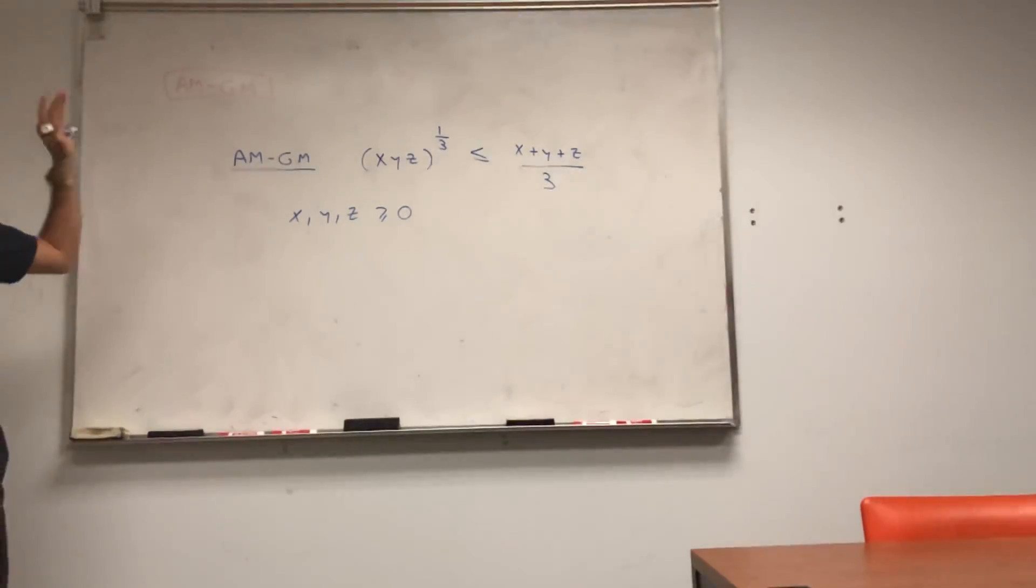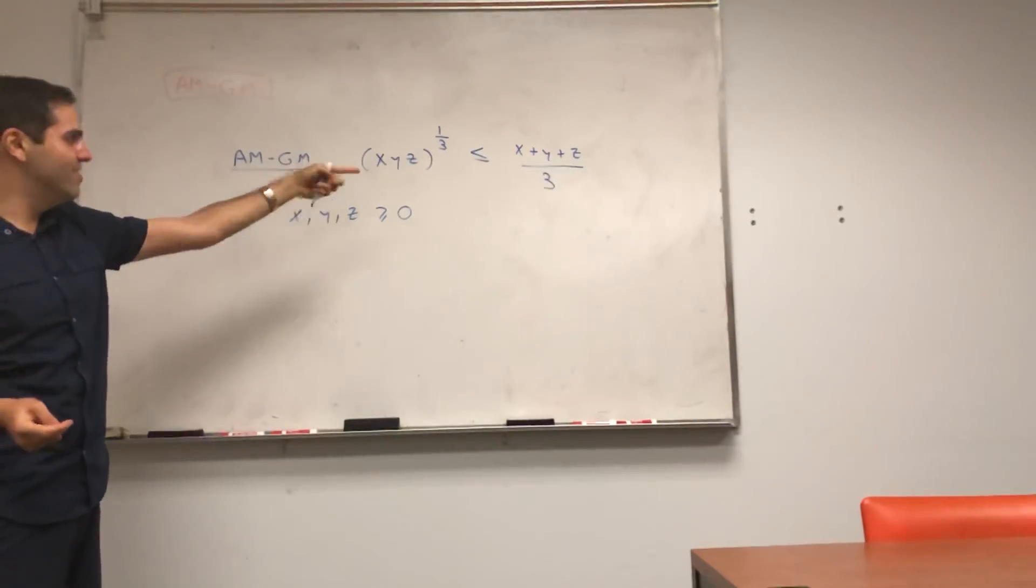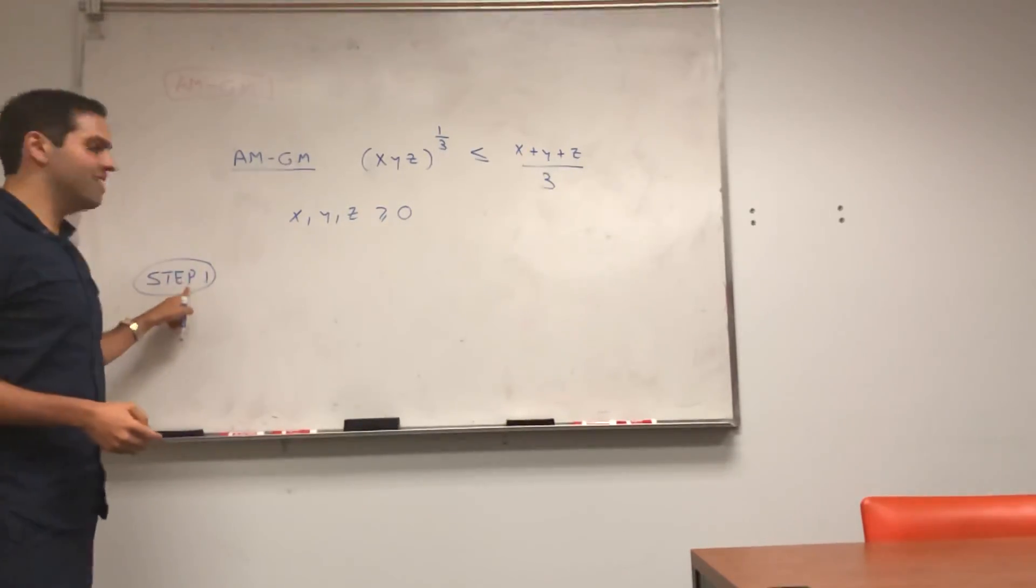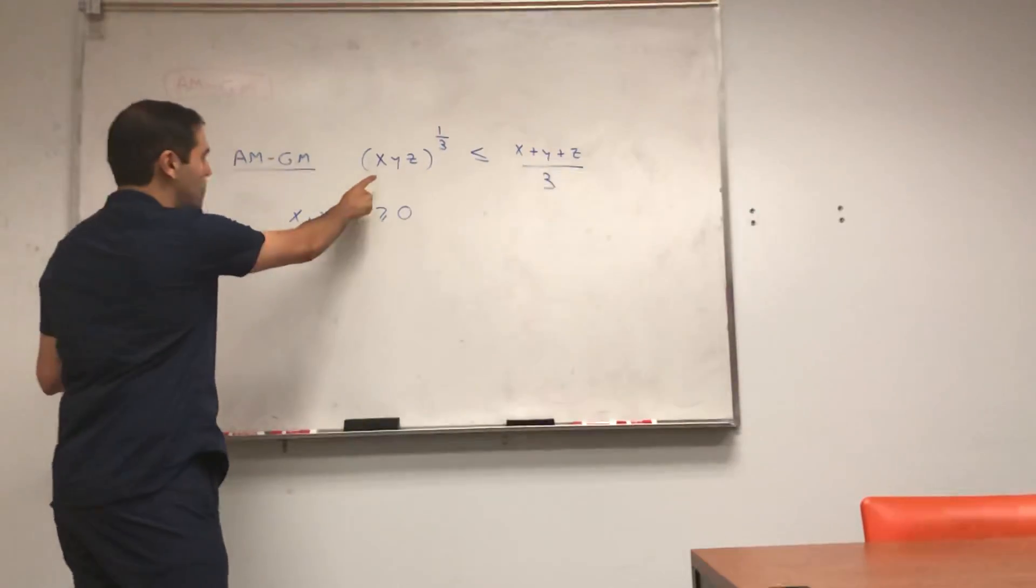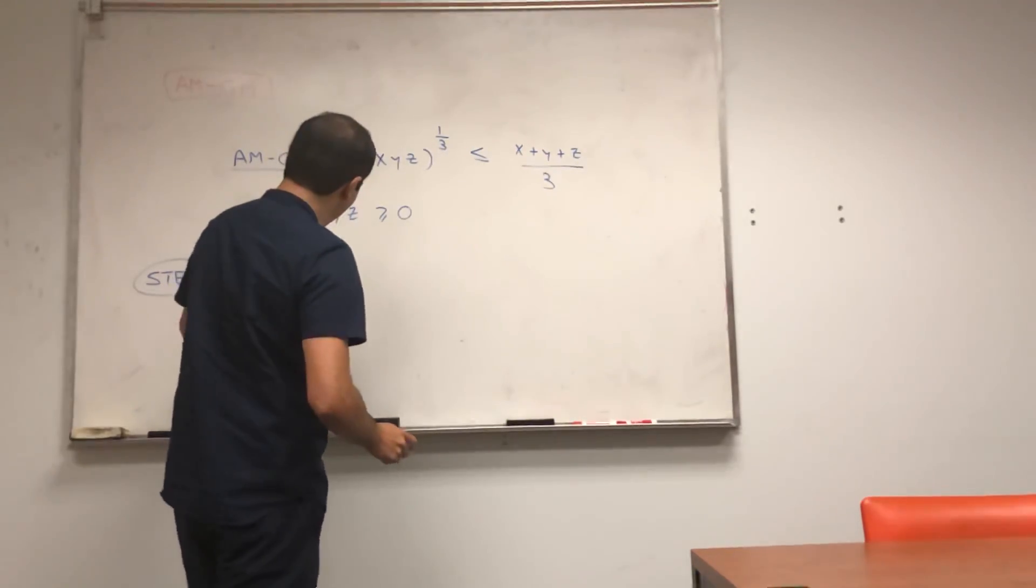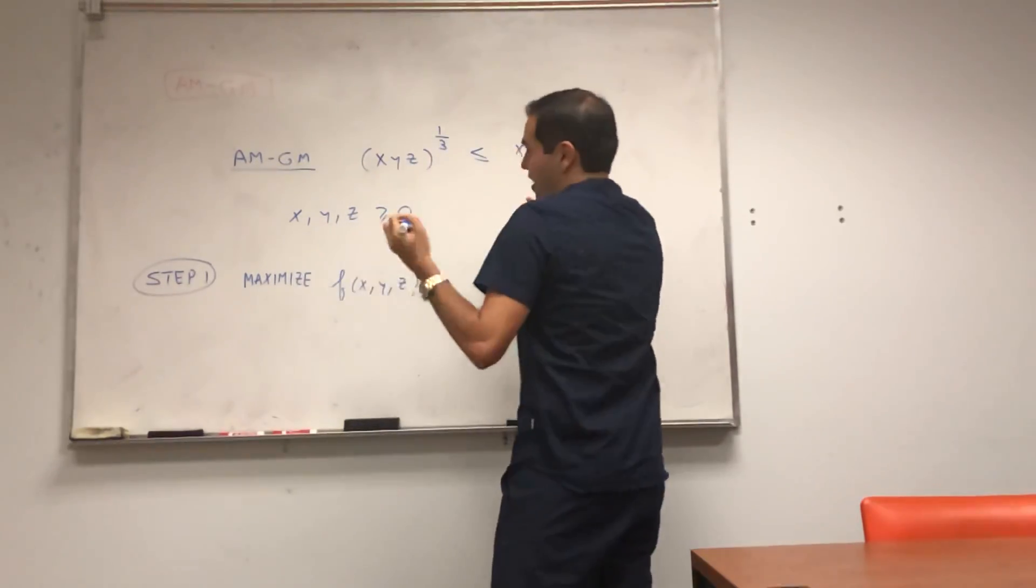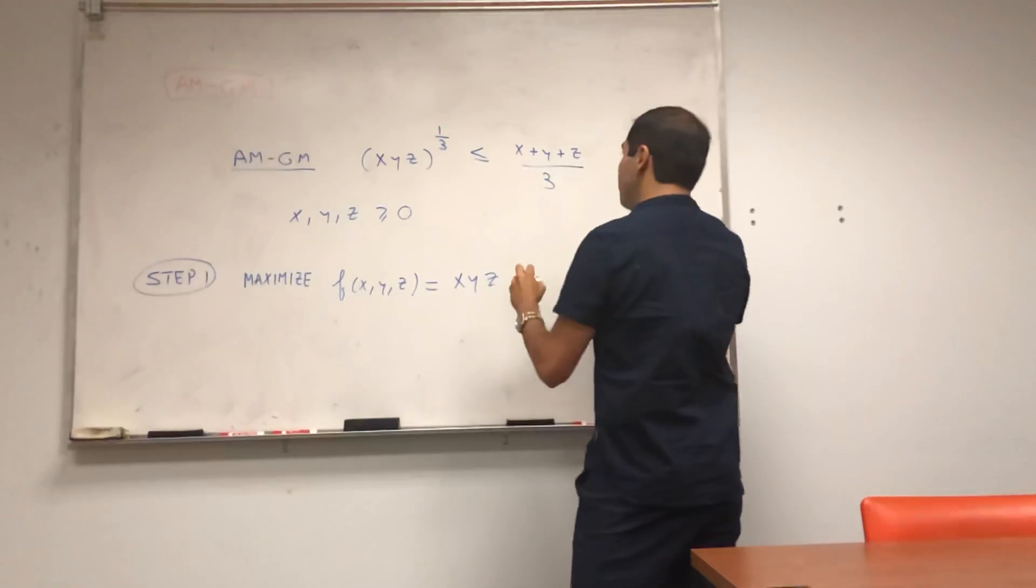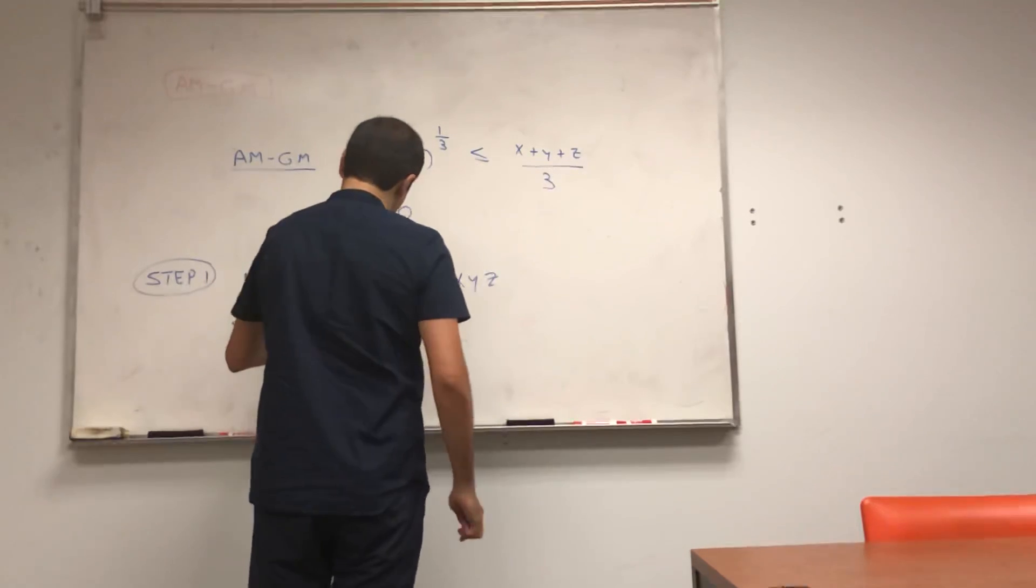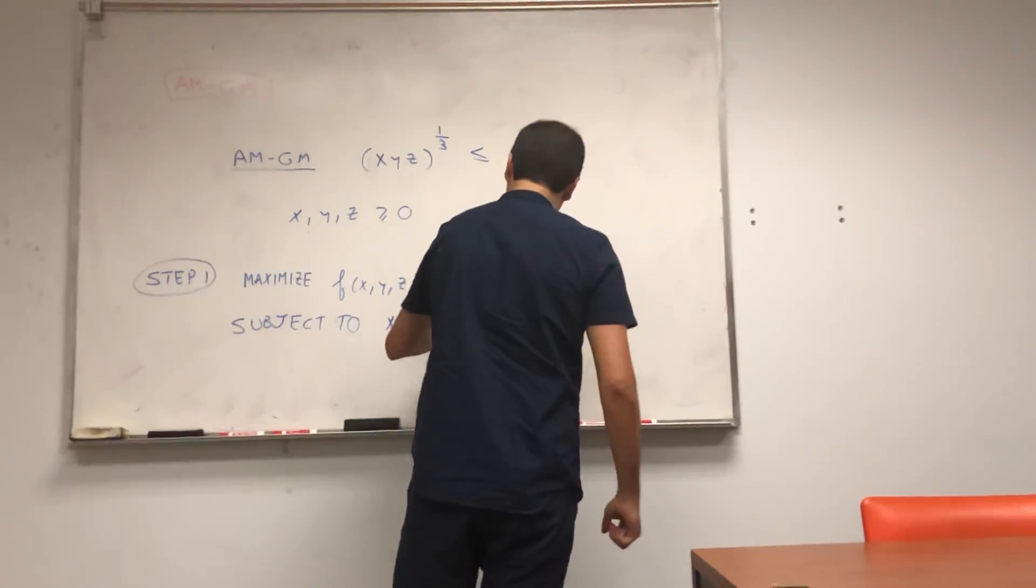And so, the way we do this, again, there's another video that uses just single variable calculus to do it. Now we want to do multivariable. So step one, and again, it's not clear why we approach it this way, but what we want to do, we want to maximize the following function, XYZ, which is just XYZ, subject to the following constraint, X plus Y plus Z equals to C.